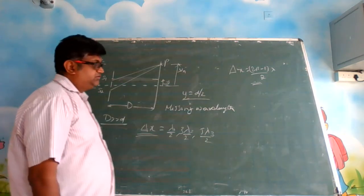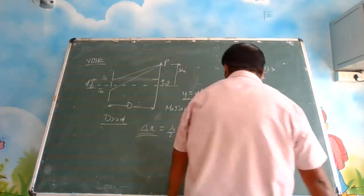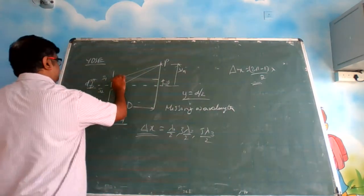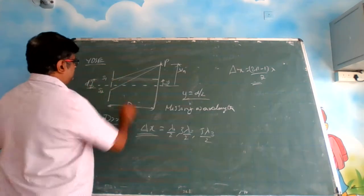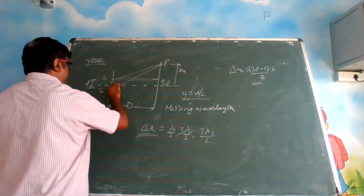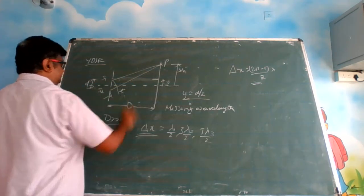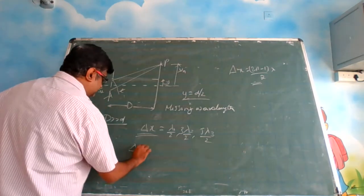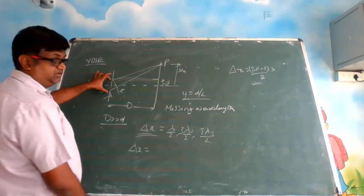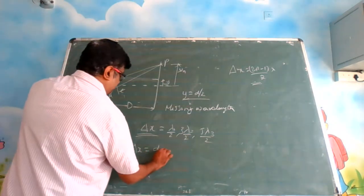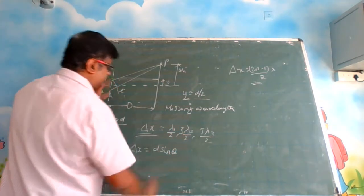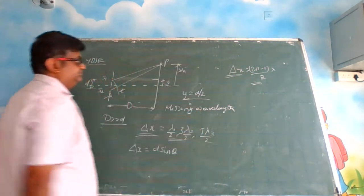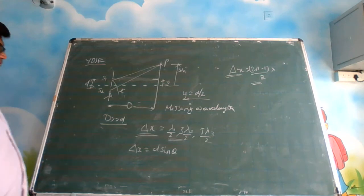What was the equation we derived for delta x? Considering the two light rays as parallel, the path difference is delta x equal to d sine theta. This is the general form.